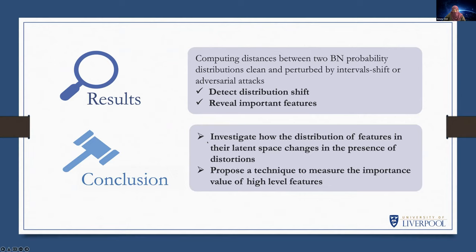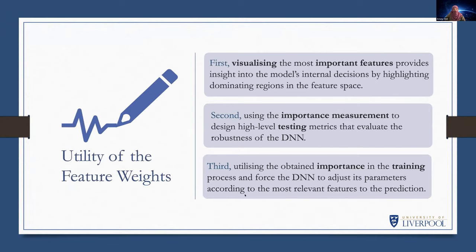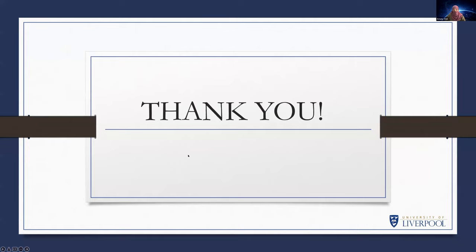The experiment results show that computing the distance between two Bayesian network probability distributions — clean and perturbed by interval shift or adversarial attack — can detect the distribution shift and reveal important features. This work investigates how the distribution of features in the latent space changes in the presence of distortion, and proposes a technique to measure the importance value of a high-level feature that indicates the role of the corresponding feature in the underlying decision process. For future work, we can use the importance features for visualization, design a high-level testing metric that evaluates the robustness of the deep neural network, and use it to improve the training process.